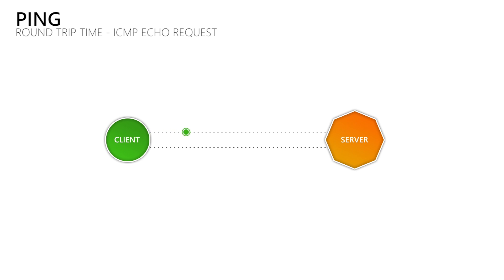Your device sends an ICMP echo request to another network device like a game server, which then sends an ICMP echo reply back to your device. When you measure the time between sending the request and receiving the answer, then this gives us the ping or roundtrip time of the data. So the ping tells us how long the data has to travel through the copper and fiber optic cables to reach the other device. And the longer it takes the data to get to its destination, the bigger the difference between what we see on our monitor and what the other players see on theirs — which is what we call lag.